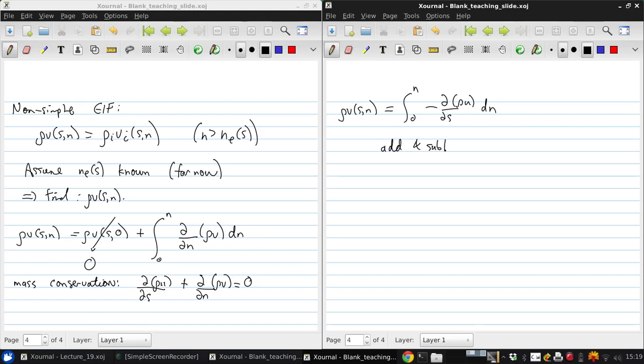So, add and subtract ∂/∂s (ρ_e u_e), then we get ρV of (s,n) is the integral from 0 to n, ∂/∂s. So, ρ_e u_e minus ρU dn. So, here we've added ρ_e u_e, and then here we've subtracted it, because ∂/∂s (ρ_e u_e). Here we've subtracted it and evaluated the integral because ρ_e u_e is not a function of n. Therefore we can just take it out of the integral and the integral is from 0 to n which is just n.